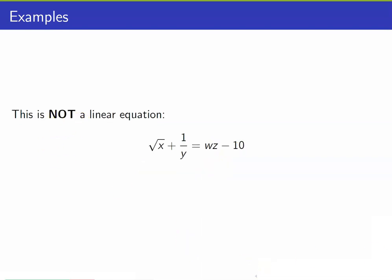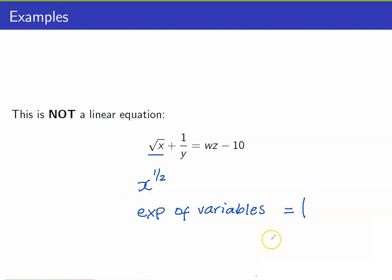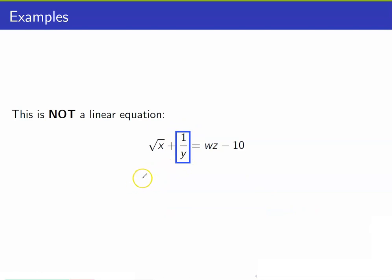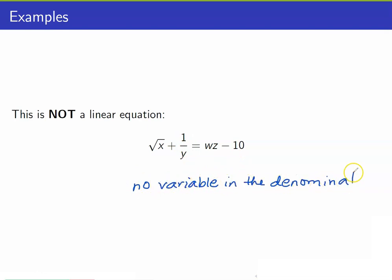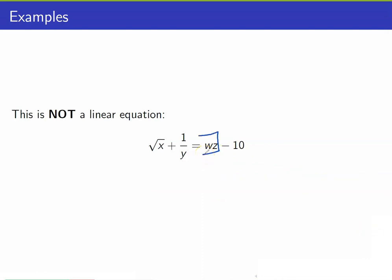This is not a linear equation. First, take note that we cannot have square root of x — it is equal to x raised to 1 half — we cannot have exponents in our variables; the exponents of our variables should be equal to 1. One more thing is that we have 1 over y here; we cannot have a variable in the denominator. Also, we cannot have a product of variables, such as wz.